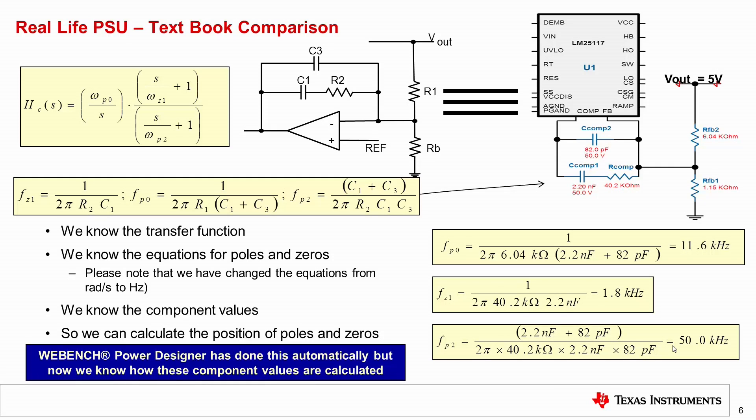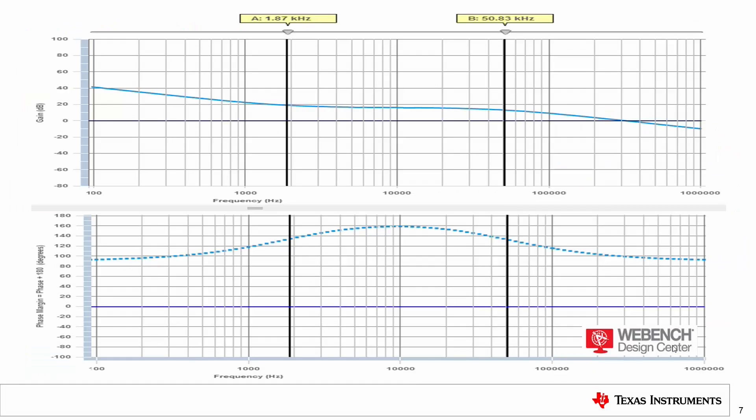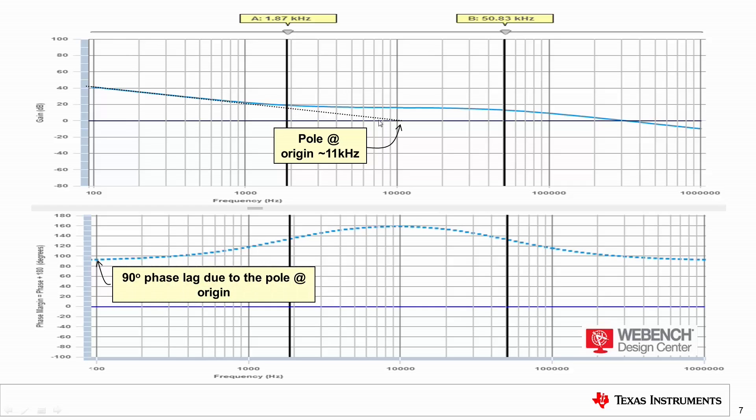So now that we know these values and at school we have studied the impact of poles and zeros, we can plot the Bode plot. Again, I have used the recomp function of WebBench in order to plot the Bode plot of this compensator. And let's have a look whether this correlates well with the control theory stuff that we have studied at school. So first of all, I had a pole at origin at 11 kilohertz. And you can see perfectly this fits absolutely perfectly with what we study in theory. I've got 90 degrees of phase lag because of my pole at origin.